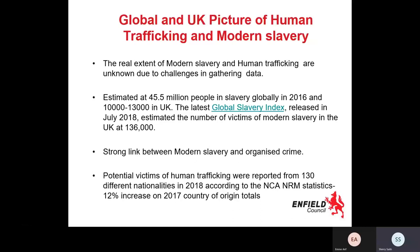Potential victims of human trafficking were reported from 130 different nationalities, according to National Crime Agency statistics from 2018. We include that to highlight that modern slavery and trafficking can happen to absolutely anybody. Sometimes there's a misconception that it only happens to certain types of people from certain parts of the world or ethnic backgrounds, or within Enfield to people from certain postcodes — and that's simply not the case.